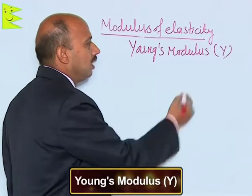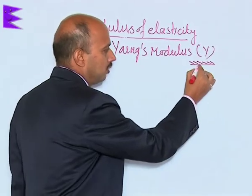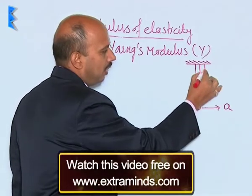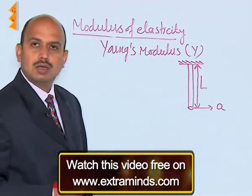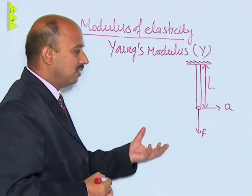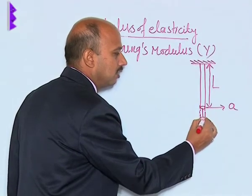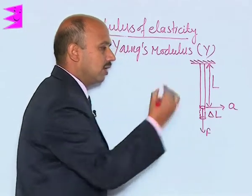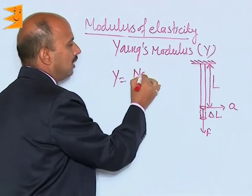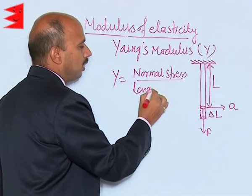For Young's modulus, suppose you have a support to suspend a wire. The wire has a cross-sectional area A and length L. When you apply force F perpendicular to the area of cross section, a stress is developed — this stress is known as tensile stress. Due to this stress, there is a change in length, and this increase in length is delta L. Young's modulus Y is equal to normal (tensile) stress divided by longitudinal strain.